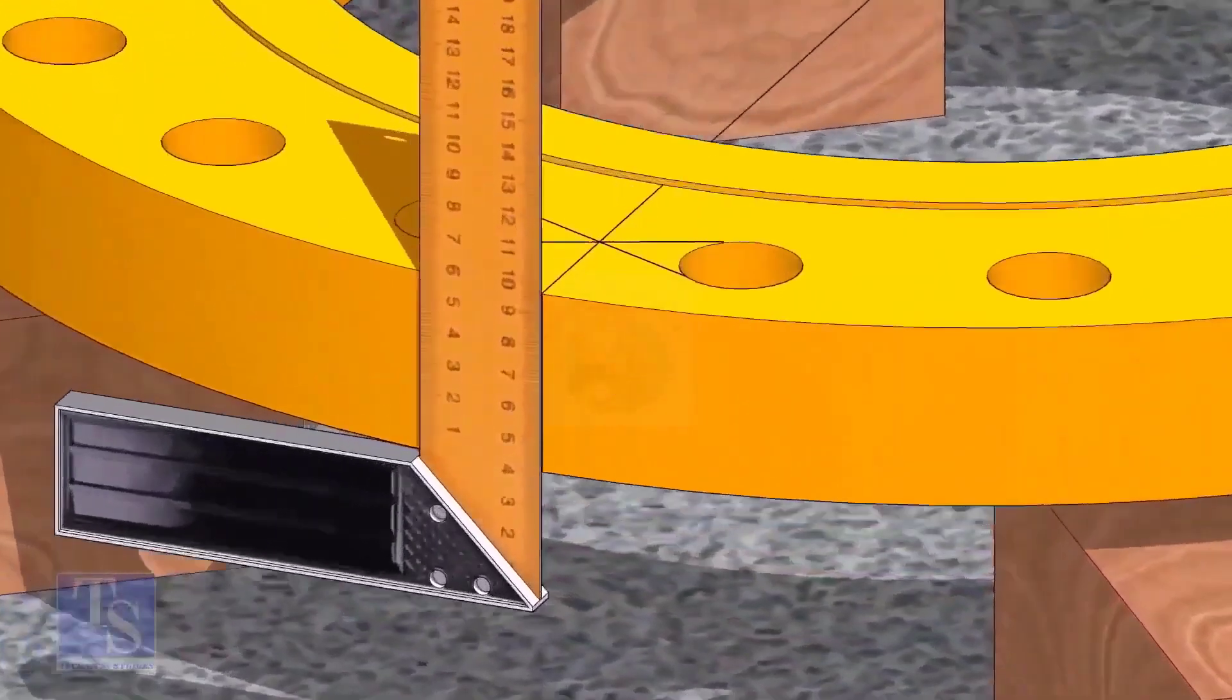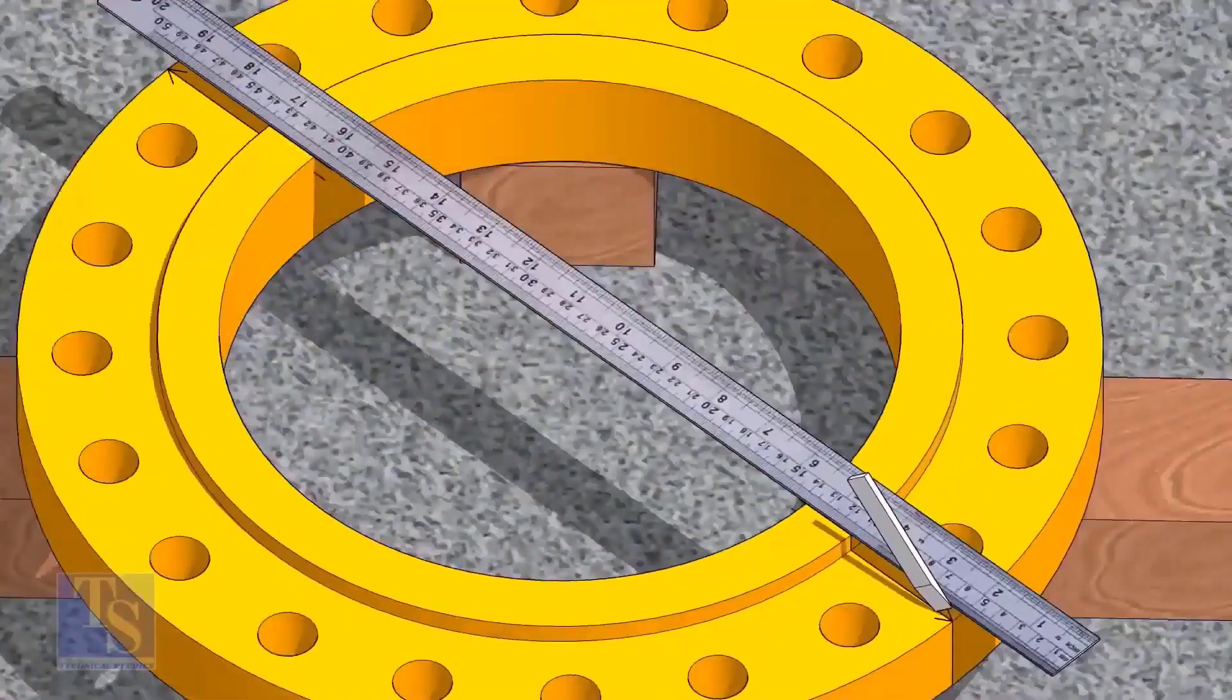Now, transfer the center line to the sides of the flange. Overturn the flange and transfer the center line on the back side of the flange.